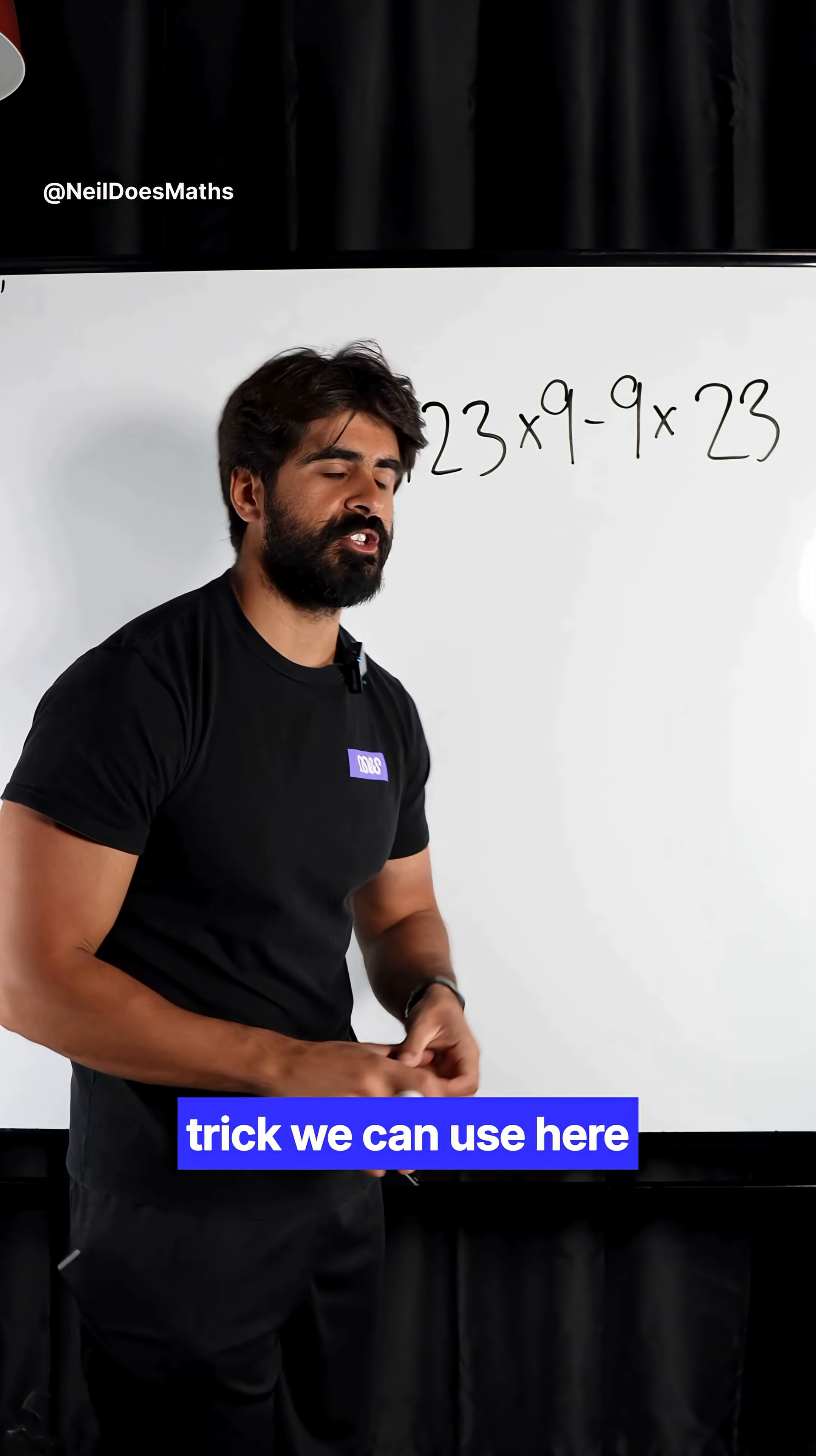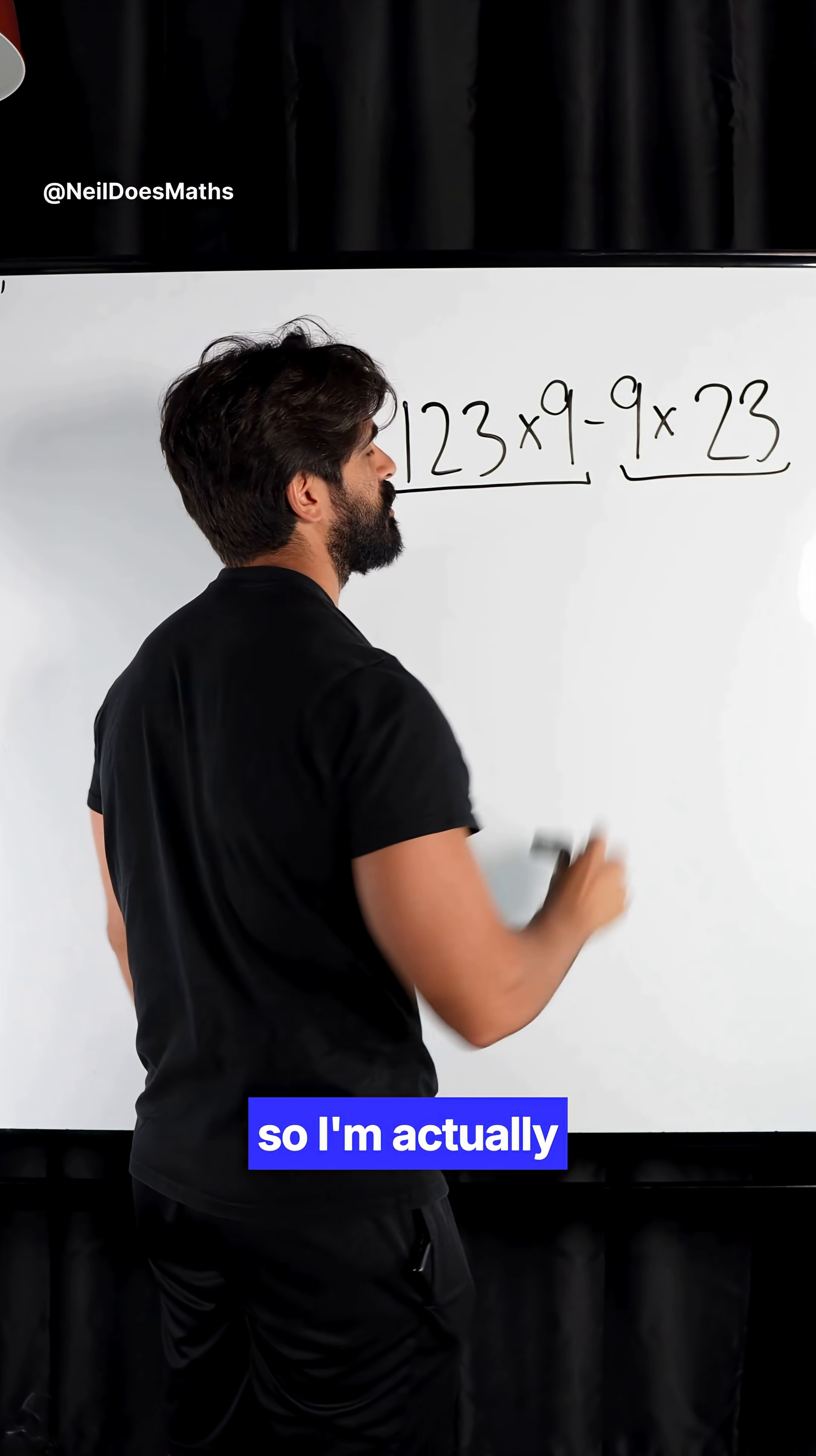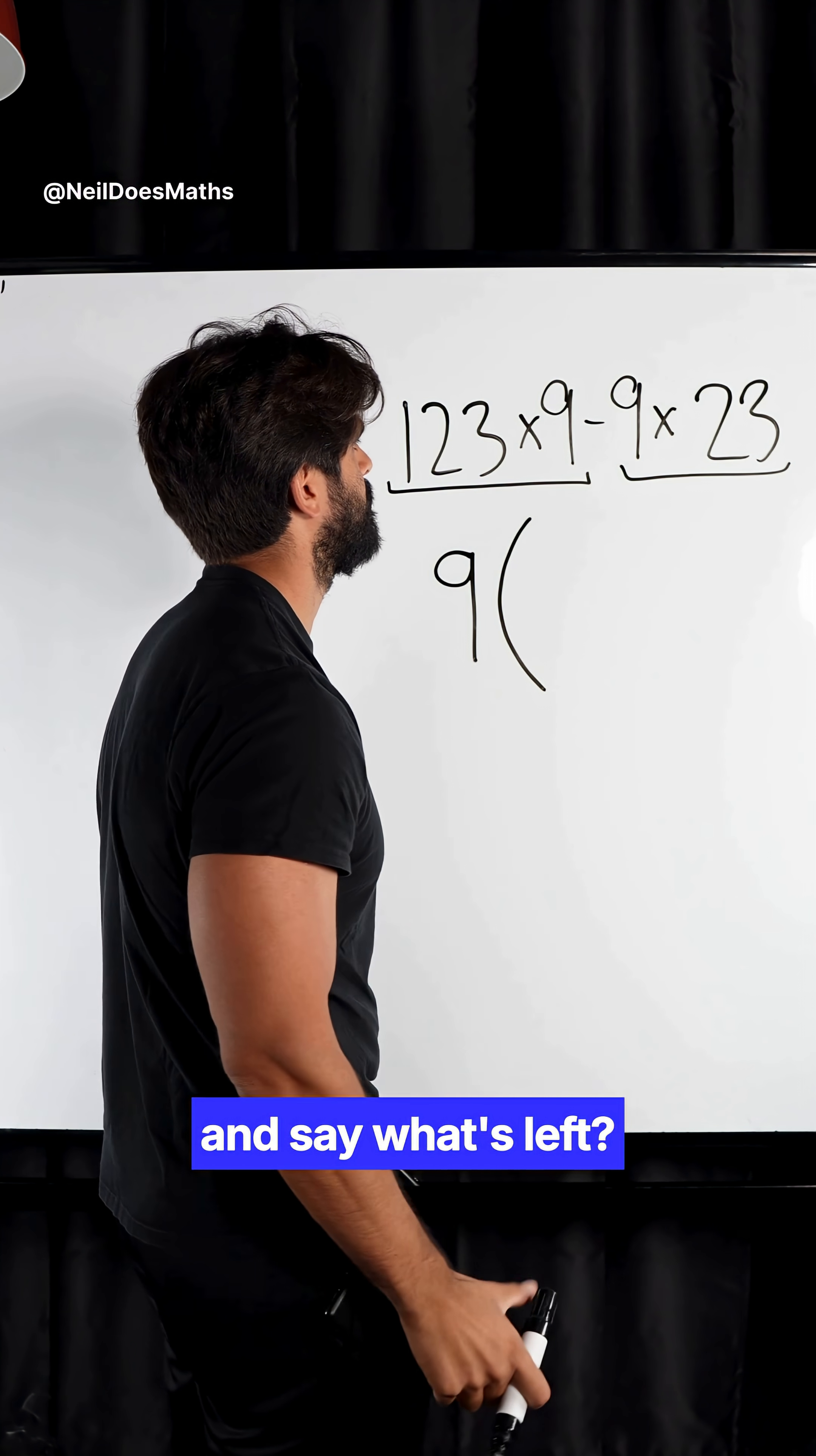Now, another cool trick we can use here is I don't want to do 123 times 9. I notice that this negative creates two separate terms. So I'm actually going to use some cheeky algebra here and use some factorization. I see a 9 in both of these two terms. I'm going to factorize out the 9 and introduce a bracket and say what's left.